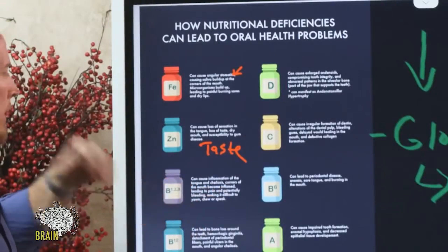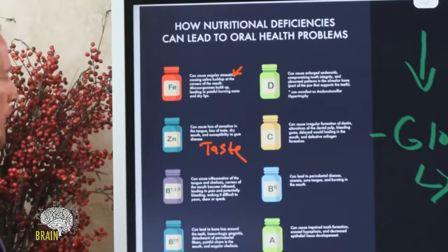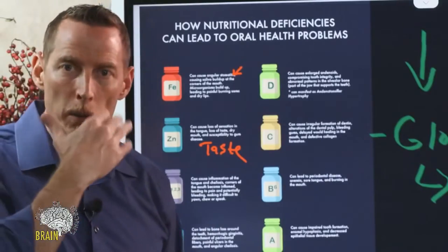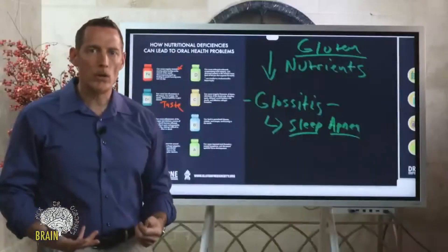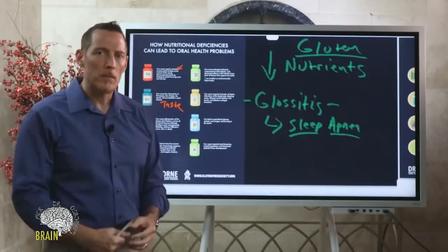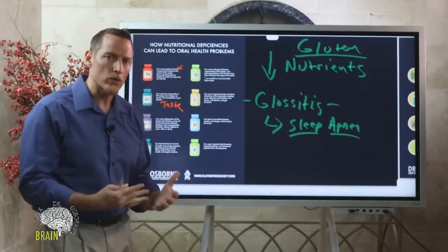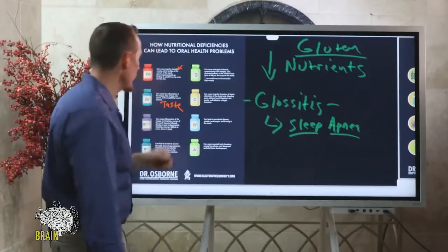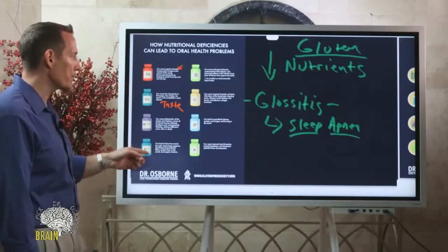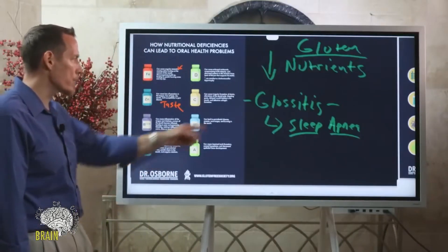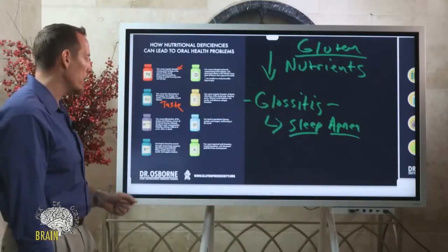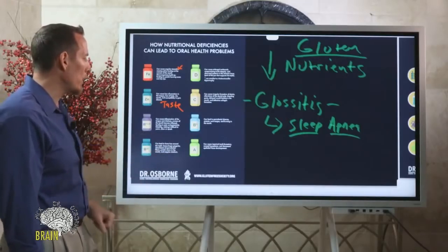Aside from inflammation in the mouth, oral issues like bleeding gums and tooth decay make it difficult to chew or speak. If there's bleeding or pain, you'll be more cautious around chewing, and that is going to affect your nutrition even further.